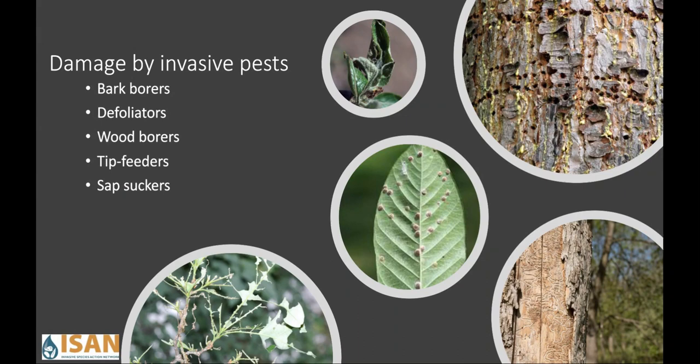Here are some close-up looks at how invasive pests can damage trees. We have examples of bark and wood borers on the right-hand side where they've drilled through the bark or gone in between the bark and damaged the tree. At the bottom, a leaf that's completely chewed is the work of a defoliator — they completely remove all the leaves on a tree, making it hard to photosynthesize. The two middle pictures show how invasive pests can take liquids out of the tree, damaging how the tree is growing.